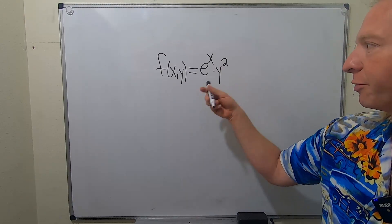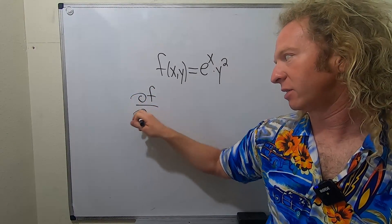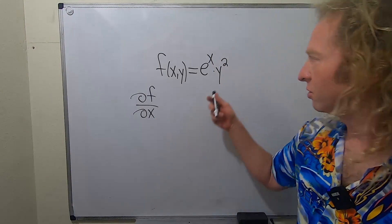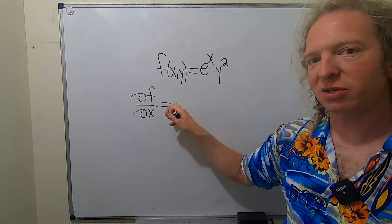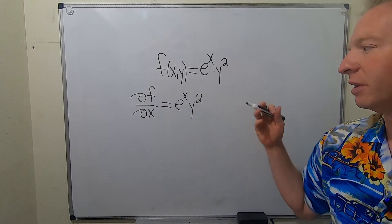First, let's find the partial derivative with respect to x. So del f, del x. When we do this, we treat all of the y's as constants. So you pretend this is a constant, and the derivative of e to the x is just e to the x. And the y squared simply hangs out because it's a constant.